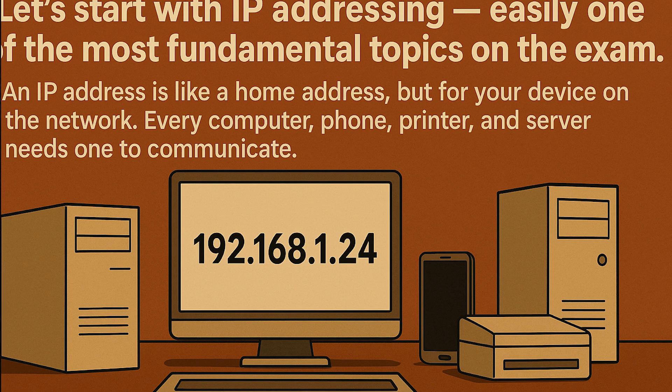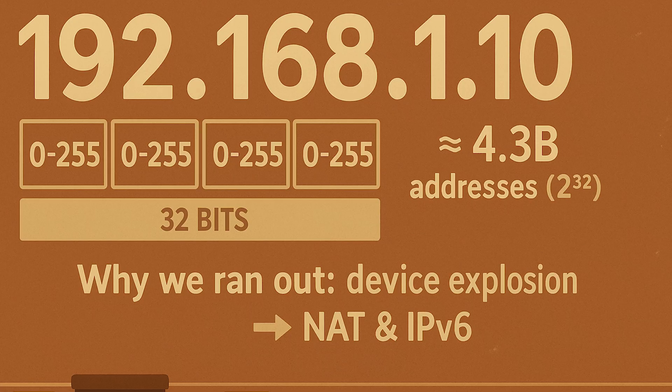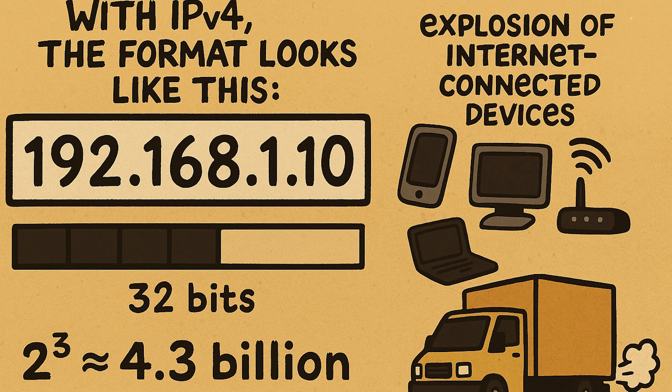Let's start with IP addressing — one of the most fundamental topics on the exam. An IP address is like a home address but for a device on your network. Every computer, phone, printer, and server needs one to communicate. With IPv4, the format looks like 192.168.1.10 — numbers separated by dots, each ranging from 0 to 255.